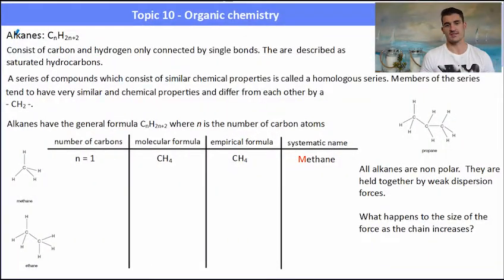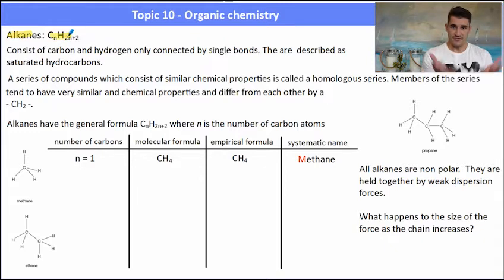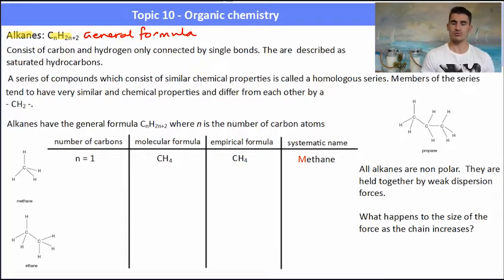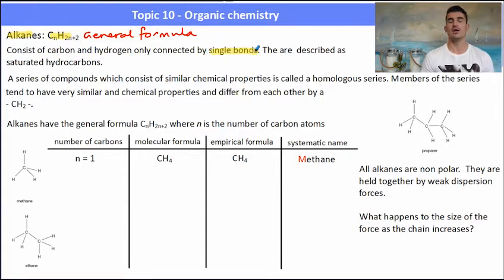Make sure you check out the text reference as well. The first family of molecules we're going to look at are called alkanes. Alkanes have the general formula CnH2n+2 — that's known as their general formula. So if we want to find the formula of an alkane, we use that formula.